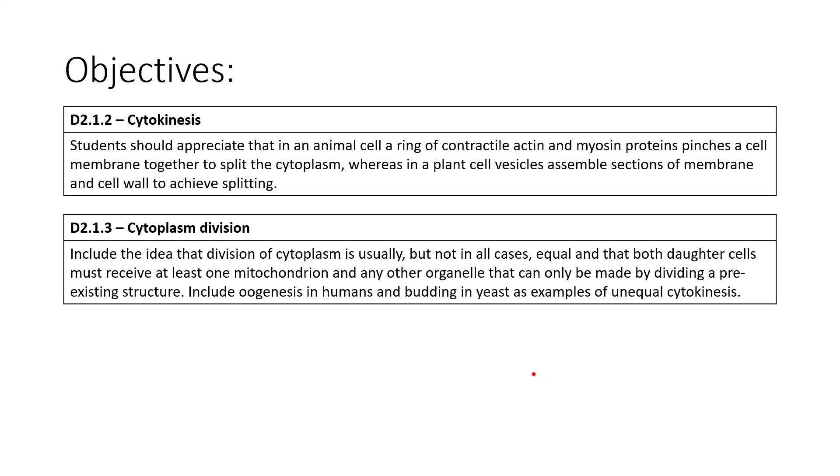d212 states that students should appreciate that in animal cells a ring of contractile actin and myosin proteins pinches the cell membrane together to split the cytoplasm, whereas in plant cells vesicles assemble sections of membrane and cell wall to achieve the splitting. d213 includes the idea that division of cytoplasm is usually equal but not always, and that both daughter cells must receive at least one mitochondrion and all organelles that can only be made by dividing a pre-existing structure, including oogenesis in humans and budding in yeast as examples of unequal cytokinesis.